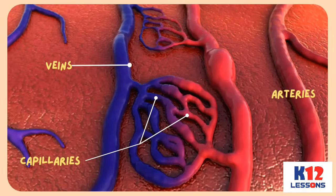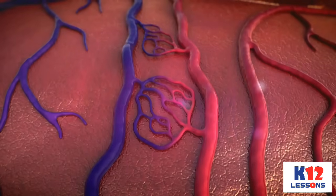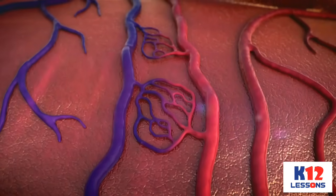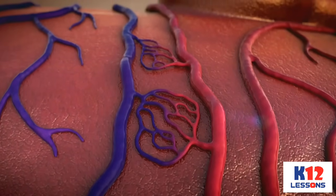There are three types of blood vessels: veins, arteries, and capillaries. These vessels carry oxygenated and deoxygenated blood in the body.